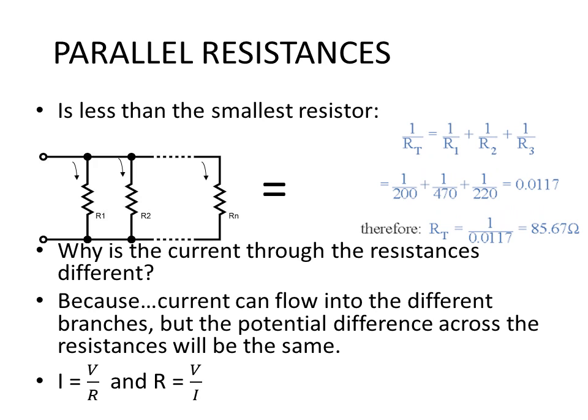For example, let us take R1 to be 200 ohms, R2 as 470 ohms and Rn as 220 ohms. To calculate the total resistance will then be 1 over R total equals 1 over R1 plus 1 over R2 plus 1 over R3. Getting the smallest common denominator you will find that will work out to 0.0117. Now inverting 1 over R total to get R total, we also have to invert our previous answer which will then work out to 85.67 ohms, which is much smaller than the smallest resistance in the parallel circuit.